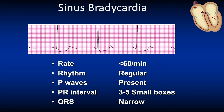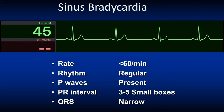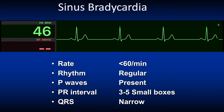Sinus bradycardia with rates greater than 50 per minute may be well tolerated by healthy adults. Athletes may routinely be in sinus bradycardia due to an optimal stroke volume that requires a lower heart rate. It may also be associated with vagal stimulation or sick sinus syndrome. Pathological causes include acute myocardial infarction, drugs such as beta blockers, digoxin and amiodarone, raised intracranial pressure, hypothermia, and hypothyroidism. Here we see an example at a rate of 46 beats per minute.